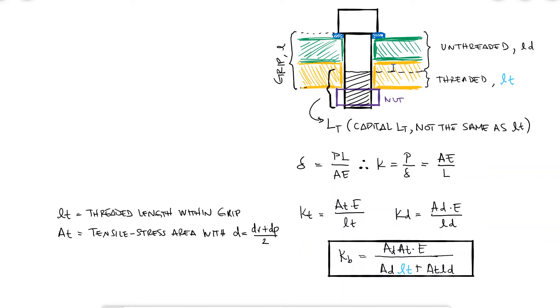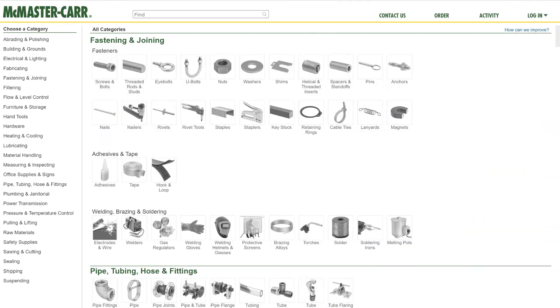The subscripts D refer to the unthreaded portion of the grip, so AD is the cross section area using the major diameter of the fastener, and LD is the unthreaded length.